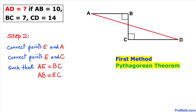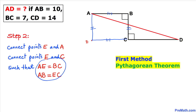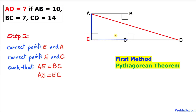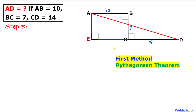In the next step we are going to connect points E, A, and E, C. I am going to put a point E somewhere here such that AE is equal to side BC, and AB equals EC, with this being a 90-degree angle. Here is our much nicer looking diagram.